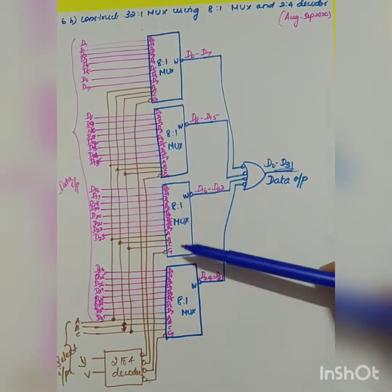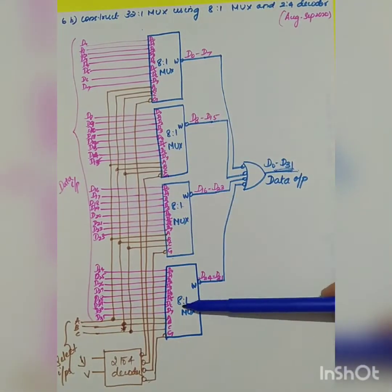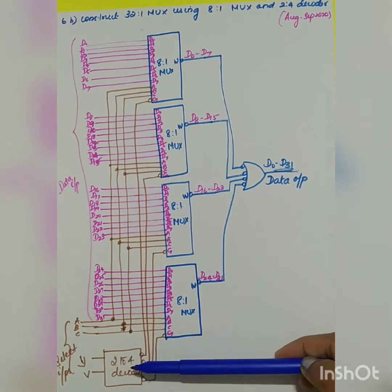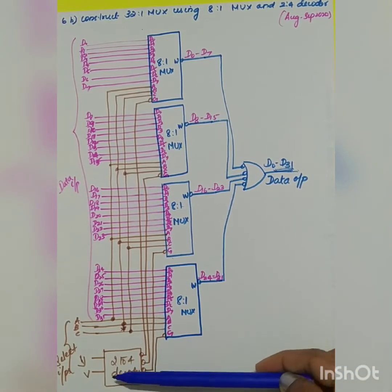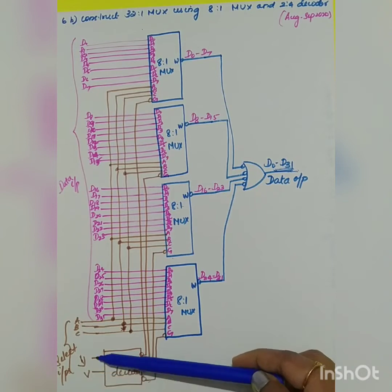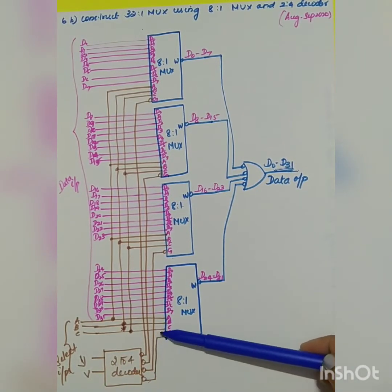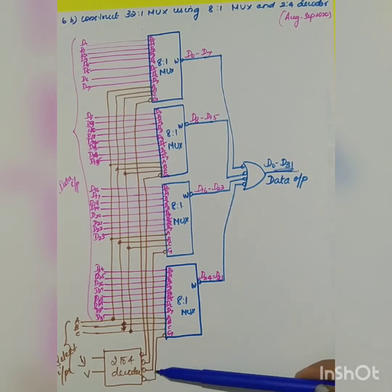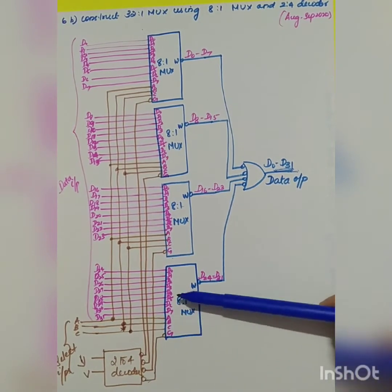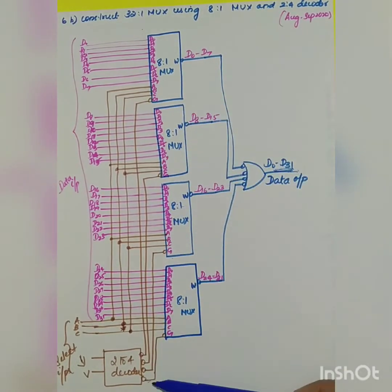Totally you are using 4 8-to-1 MUXes and 1 2-to-4 decoder. The input of the decoder will be 2 inputs and the output will be 4 outputs. Active low outputs will be given to each multiplexer.